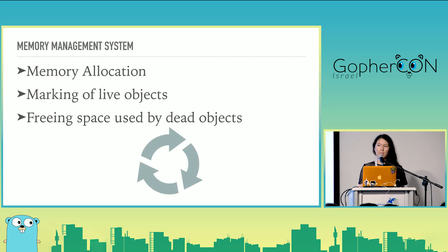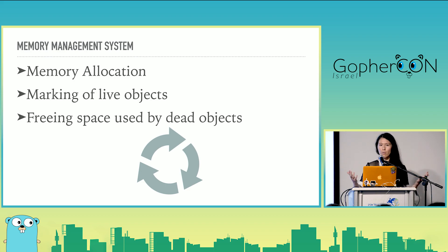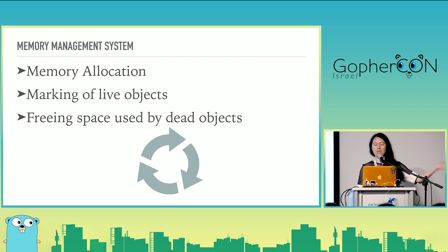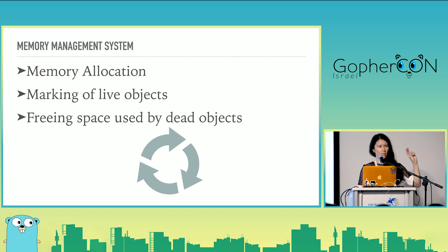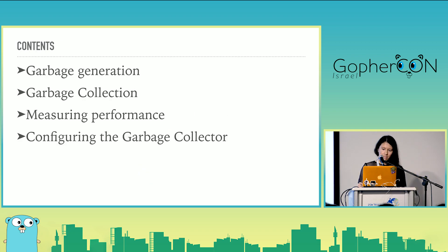The whole point of a memory management system is to give us the illusion of infinite memory. I manage a Golang codebase and I just want to write objects and have them get cleaned up without worrying about it. I do the memory allocation part, and then something in the background — the garbage collector — does the marking of live objects and the cleanup of dead objects. I'll use 'live' and 'reachable' interchangeably, as well as 'dead' and 'unreachable.' The talk will cover how garbage is made, how it's cleaned up, and how to measure performance before discussing how to configure the garbage collector.